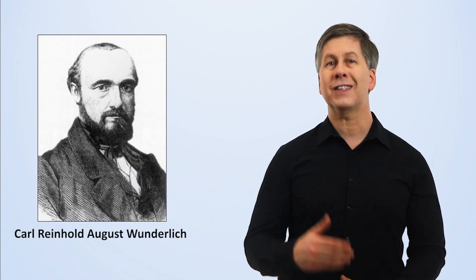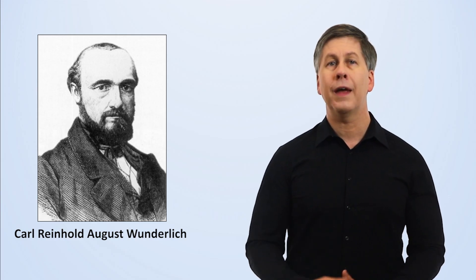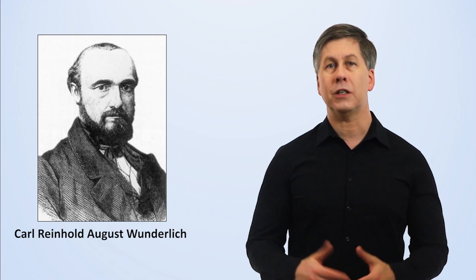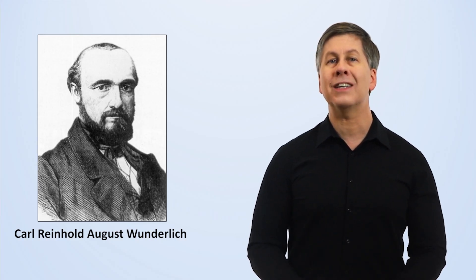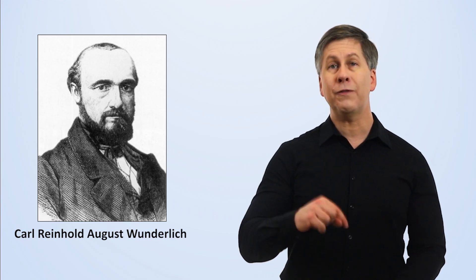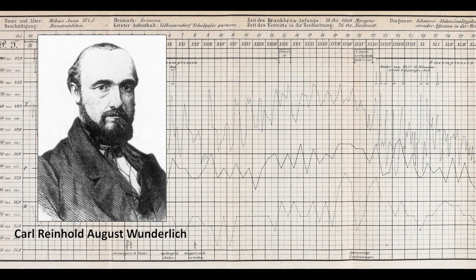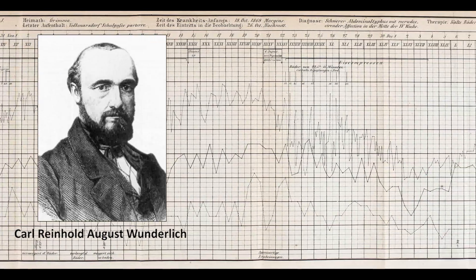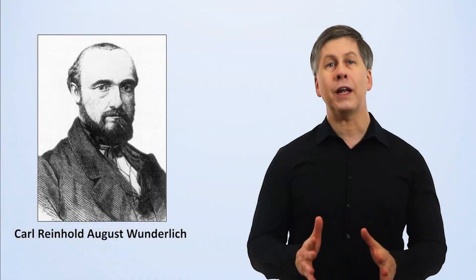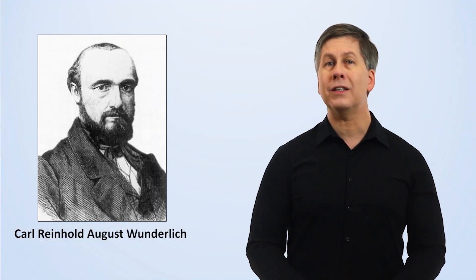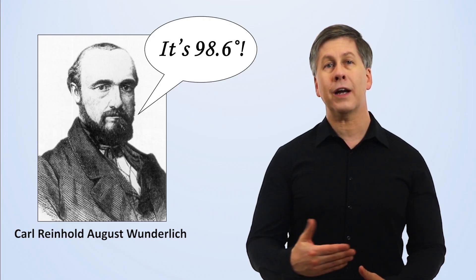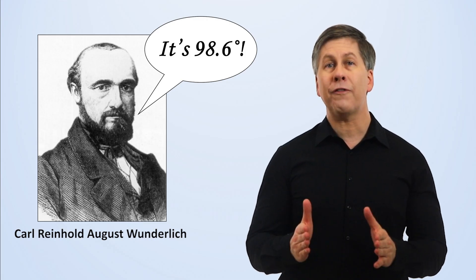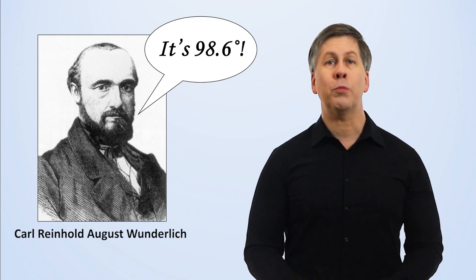Wunderlich was the first physician to seriously study human body temperature, and he is generally credited as the first to promote the idea that fevers were a symptom of disease and should not be framed as the disease itself. He also recorded 1 million axillary temperature readings from 25,000 individuals as part of a massive study spanning many years. Based on those readings, he identified 37.0 Celsius, or 98.6 Fahrenheit, as the mean temperature in adults. This is the origin of the widespread belief, at least in America, that 98.6 is normal body temperature.